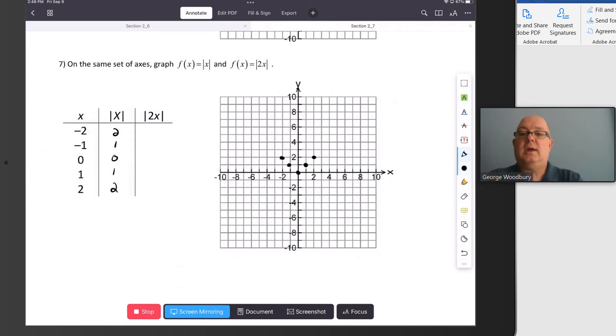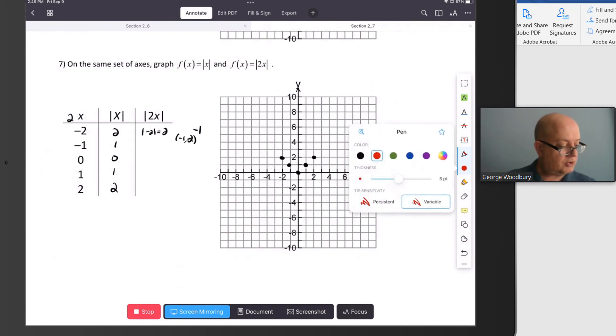And when, if we want 2x to be negative 2, that's when x is equal to negative 1. The absolute value of 2 times negative 1 is negative 2, that's 2. So that's the point negative 1, 2. And I'm going to graph that in red. I should have been using red all along. Negative 1, 2.